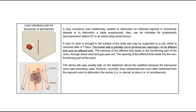For loop colostomy, it was traditionally created to defunction an inflamed sigmoid in diverticular disease, or to defunction a distal anastomosis. It can also be indicated for prophylactic decompression before radiotherapy in an obstructing rectal tumor. A loop of colon is brought to the surface of the body and may be supported on a rod, which is removed after five to seven days. The bowel wall is partially cut to produce two openings — an afferent limb leading to the functioning part of the colon, and an efferent limb leading into the non-functioning part. The stoma site was traditionally high on the abdomen above the waistline using the transverse colon, but currently loop colostomies are more often fashioned from the sigmoid colon to defunction the rectum or anus.